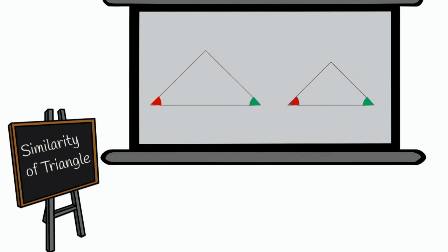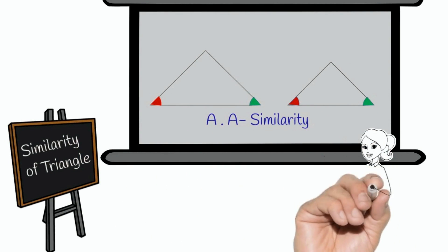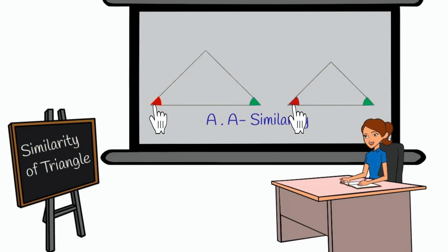The angle-angle (AA) criterion for similarity of two triangles states that if two angles of one triangle are respectively equal to two angles of another triangle, then the two triangles are similar.